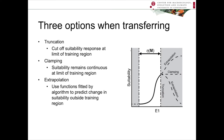Here are those three options written down again. Truncation means that you cut off suitability response at the limit of the training region. Clamping is when suitability remains continuous at the limit of the training region. And extrapolation uses the functions fitted by the algorithm to predict change in suitability outside the training region. That extrapolation might go up, go down, or come somewhere in between. It can be rather hard to predict and may or may not be more biologically realistic than clamping or truncation, depending on the nature of the variable and the algorithm.